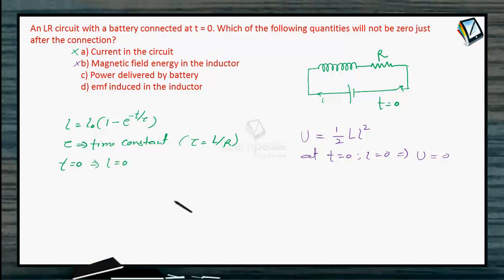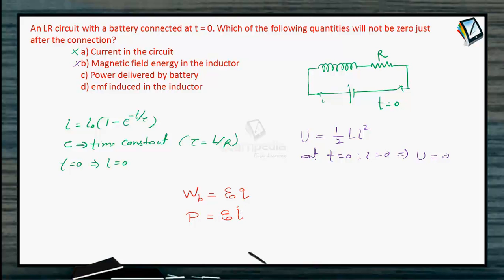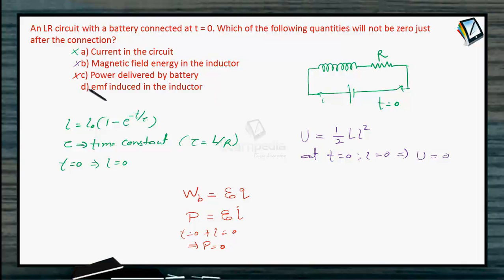Option C: power delivered by the battery. The power of the battery is EMF multiplied by the current. Since at T = 0 the current is 0, the power delivered is also 0. So this option is not correct either, as power delivered by the battery is zero at T = 0.